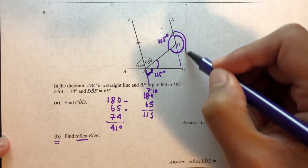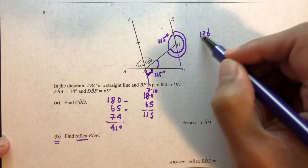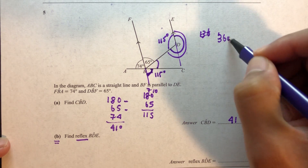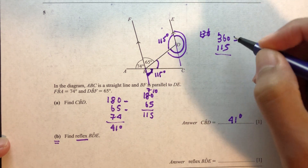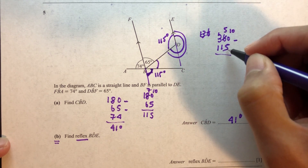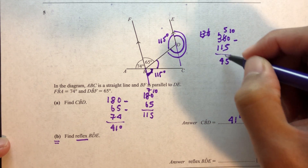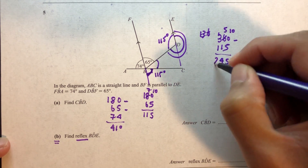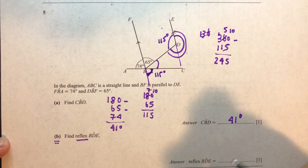Using the straight line (180 degrees), the big angle is 180 minus 65, which equals 115 degrees. Therefore the interior angle is 115 degrees. The reflex angle BDE is 360 minus 115, which equals 245 degrees.